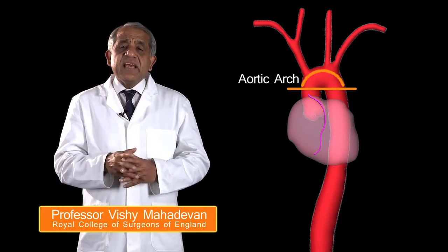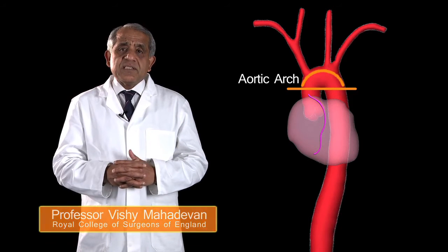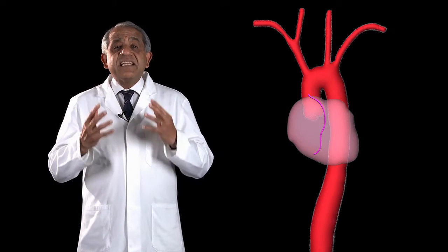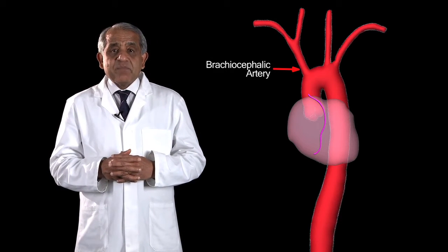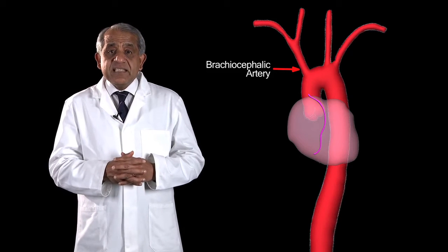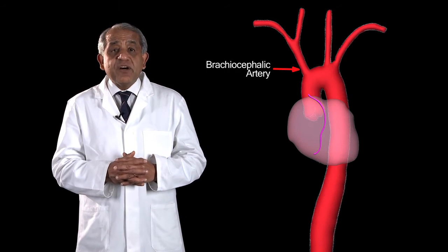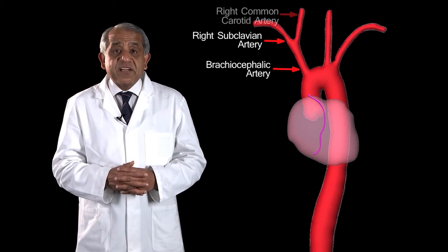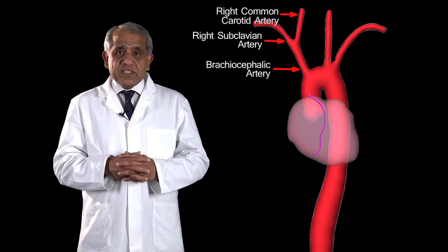From the convexity of the aortic arch arise three large branches. The first and largest is called the brachiocephalic artery. This is the one that runs upwards and to the right, and behind the right sternoclavicular joint. It breaks up into the right subclavian and right common carotid arteries.